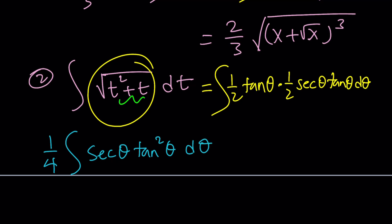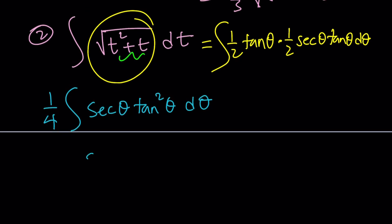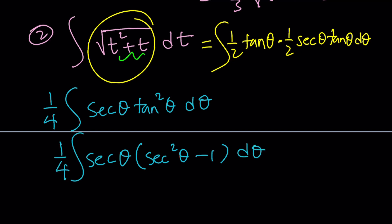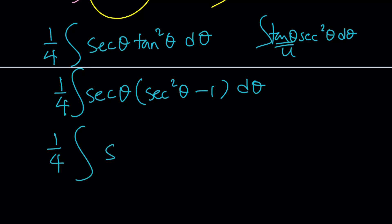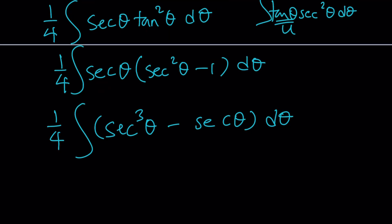This integral isn't very clean. However, since tan²θ = sec²θ − 1, I can replace tan²θ with sec²θ − 1. Our goal is to convert this to a secant-only integral. This gives ¼ times the integral of sec³θ dθ minus ¼ times the integral of sec θ dθ. If you're not familiar with powers of secant, check out that video.